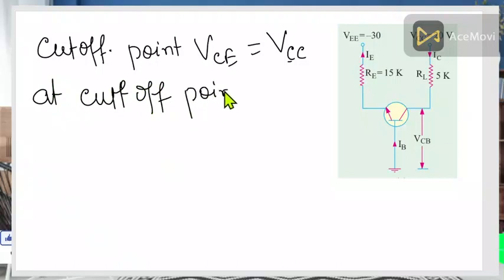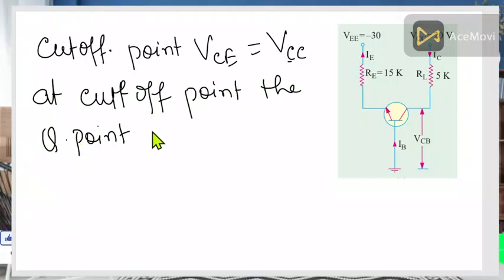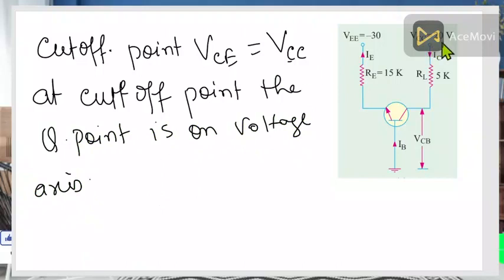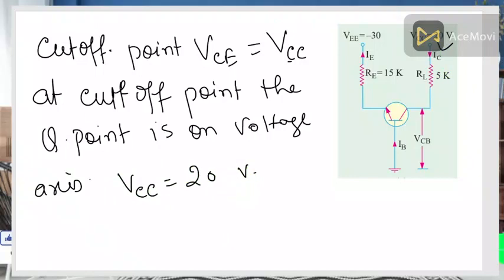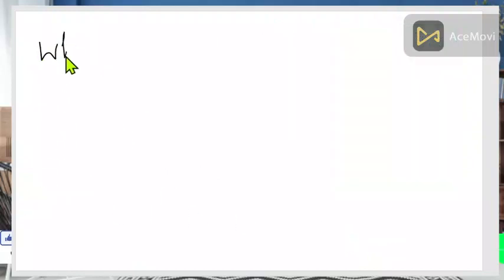From the circuit you can see VCC is 20 volts, so on the x-axis you have located the point 20 volts — this is the cutoff point. Now the next job is to find the saturation point. At the saturation point the current is maximum.